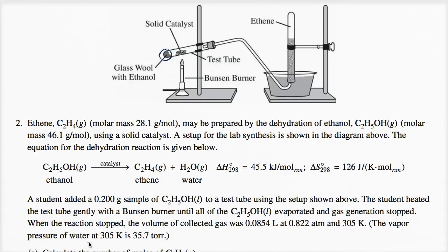The vapor pressure of water at 305 Kelvin is 35.7 Torr. In the presence of the catalyst, the ethanol undergoes dehydration to produce ethene and water. Once cooled, the ethene is captured at the top in a gaseous state, while the water vapor condenses to liquid water.